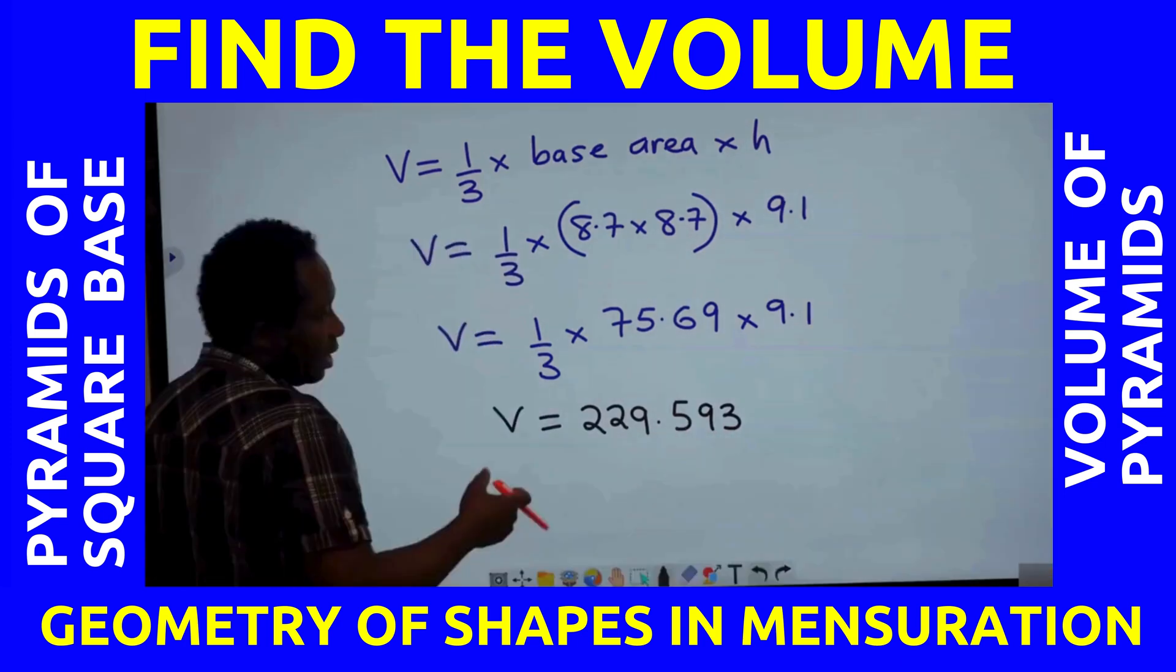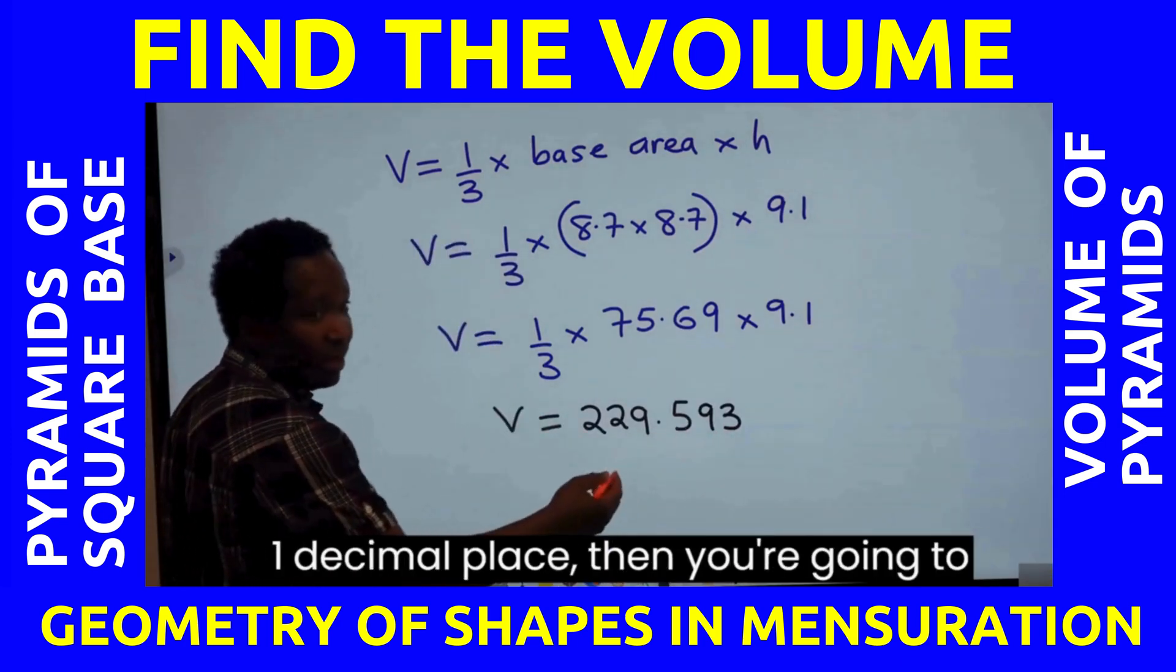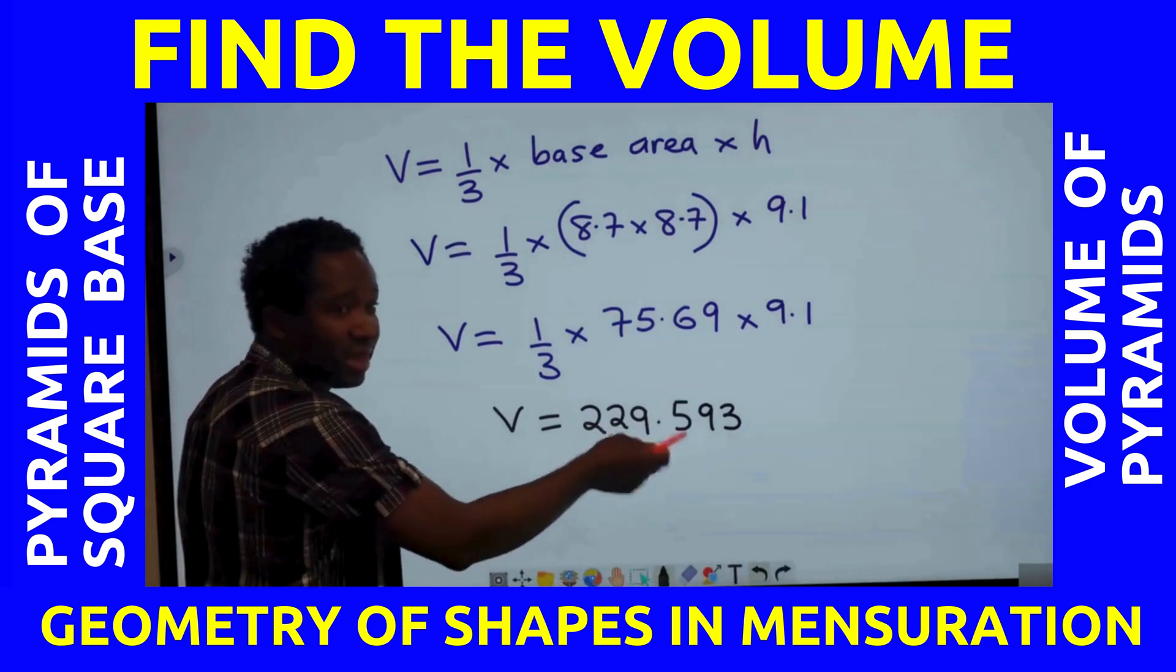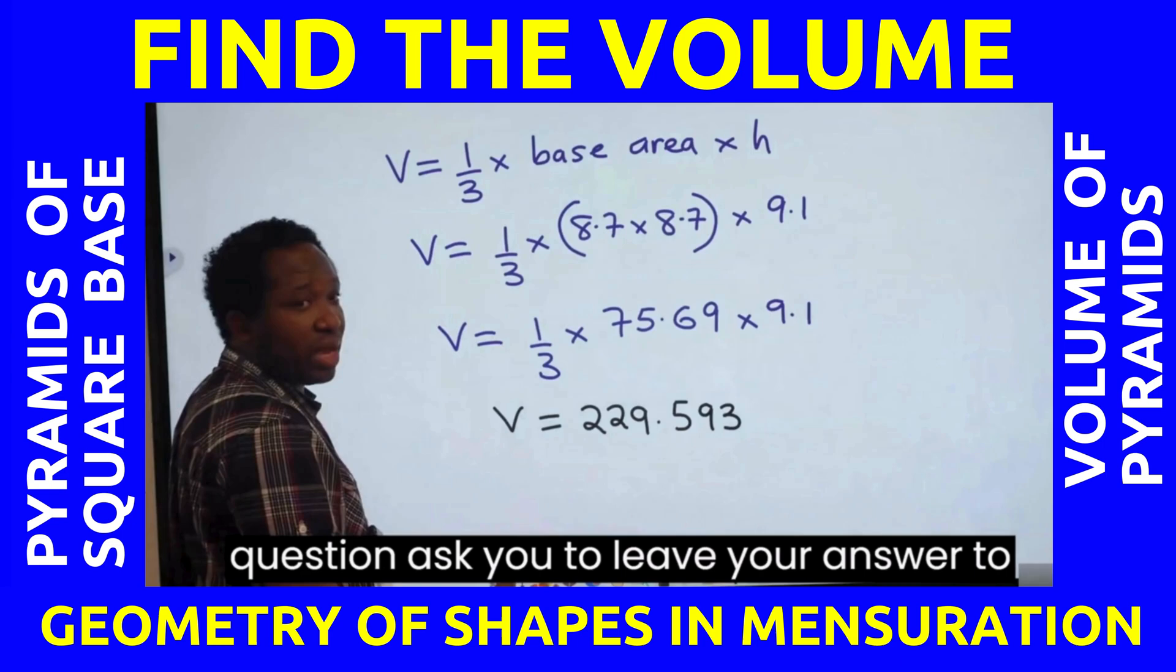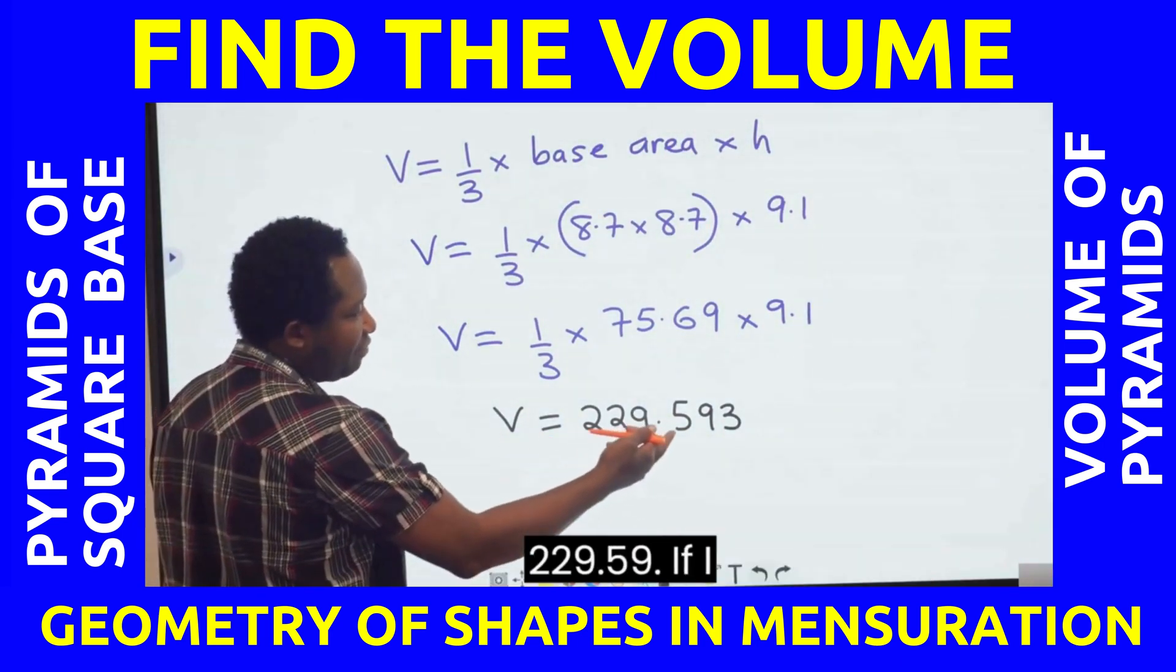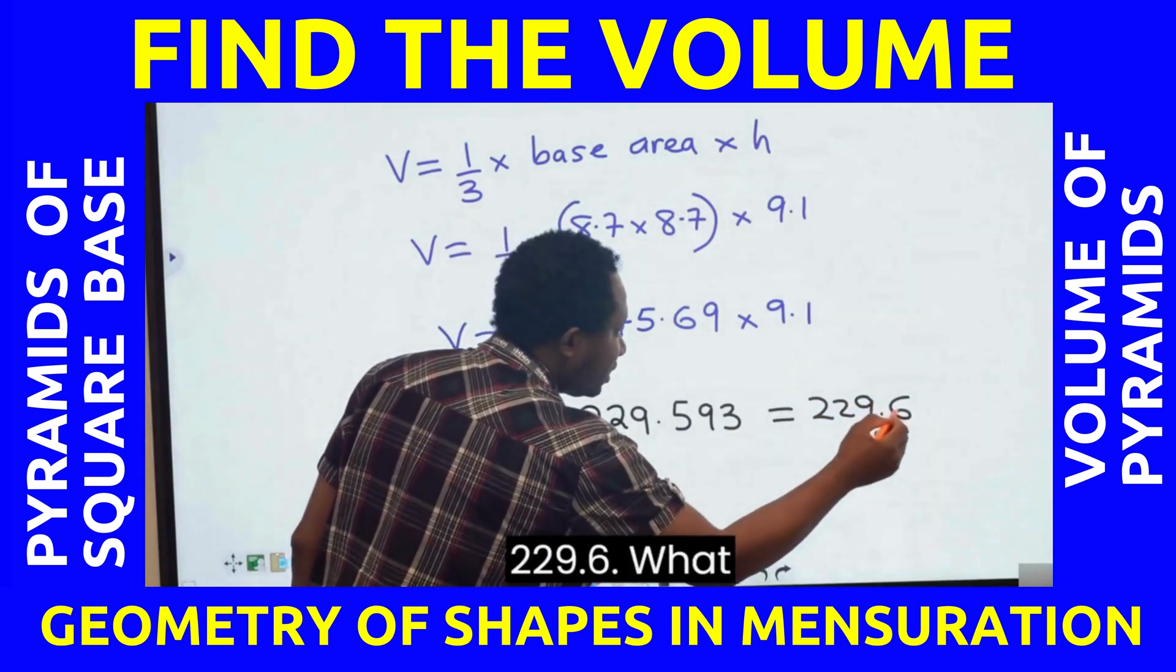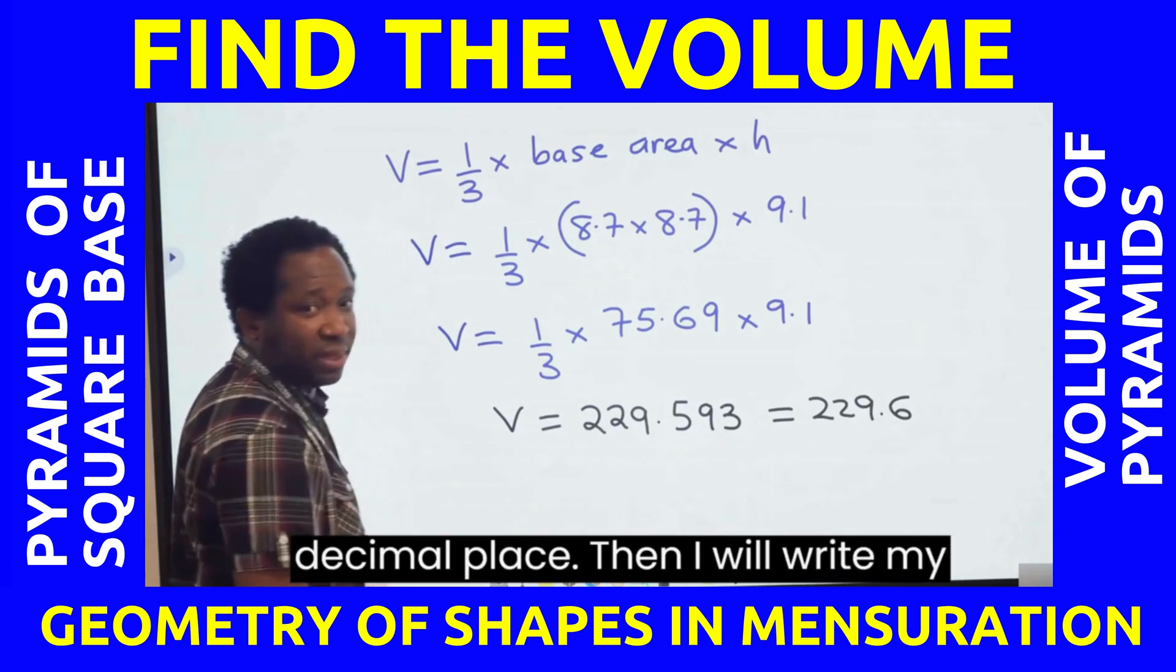Like this. If the question asks you to leave it to 1 decimal place, then you are going to have 229.6. This is to 3 decimal places. If the question asks you to leave your answer to 2 decimal places, it's going to be 229.59. If I have this as 229.6, what is this? I've left it to 1 decimal place.